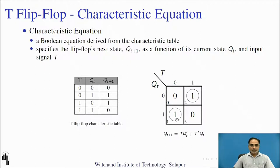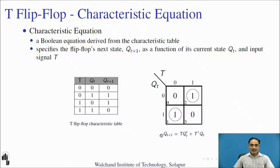The first group is minterm 2; the product term for this group is TQ̄. For the second single group, the product term is T̄Q. Adding these two product terms, the next state expression in SOP form is TQ̄ + T̄Q. This is the characteristic equation for the T flip-flop, and it is unique. This expression will be required whenever you are designing different applications based on the T flip-flop, for example counters and state machines.